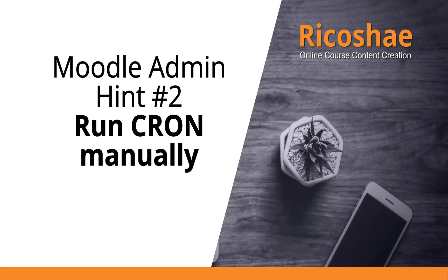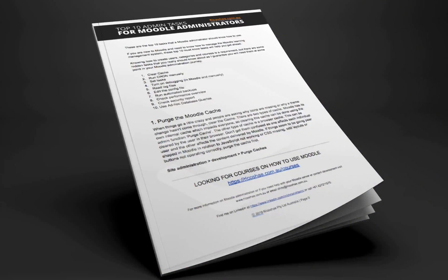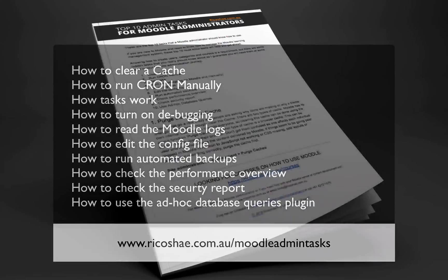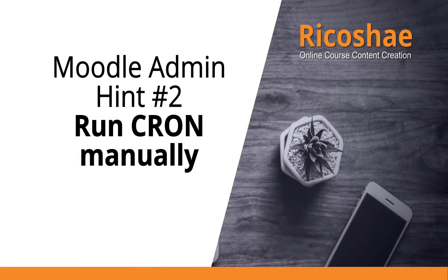And that's how you run all of your Cron tasks manually. If you would like to know about some more of the top 10 admin tasks that a Moodle administrator should know about, click on the link below this video. I'll take you through how to clear a cache, how to run Cron, how to set tasks, turning on debugging, reading log files, edit the config, run automated backups, check performance overview, check security reports, and how to use the ad hoc database queries. I hope this has been helpful. Please feel free to check out more videos on how to make the most out of the Moodle learning management system.